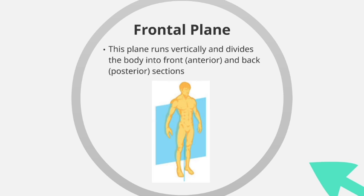Looking at the frontal plane first, this is a plane that runs vertically and divides the body into front and back sections. The front is also known as the anterior, whilst the back is also known as the posterior. You can see from the diagram clearly the plane is dividing the body into the front and back sections.